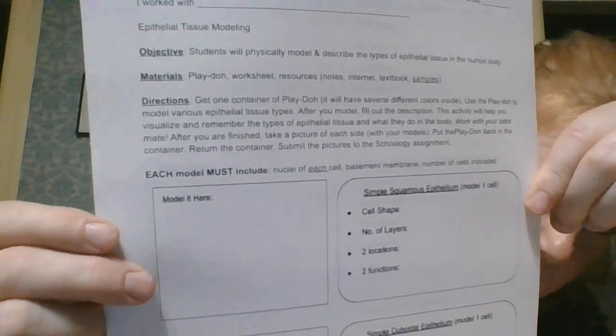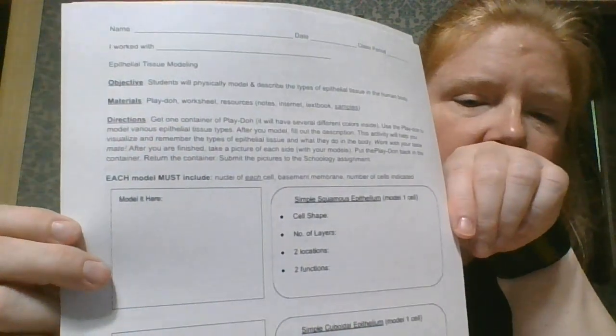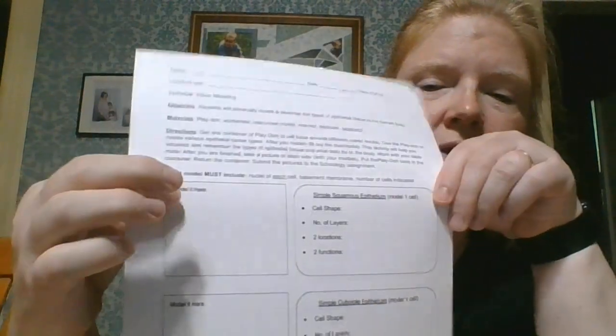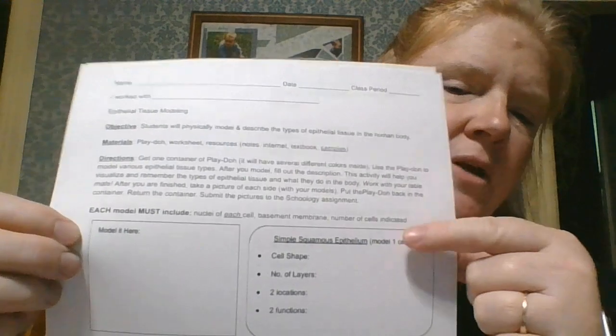All right, so it says for each model, I have to include a nuclei for each cell, the basement membrane, and the number of cells indicated. So here's my first type. You could see it tells me right here how many cells. So I only have one cell here, a simple squamous.